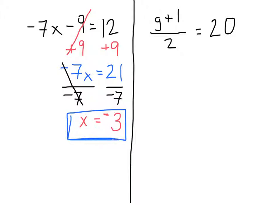This is our answer. If you want, you can plug it back in to double check. Wherever you see x in the equation, plug in negative 3. So we have negative 7 times negative 3 minus 9 equals 12. A negative times a negative is always a positive, so we have 21 minus 9 equals 12. Yes, it is — so x equals negative 3 is the answer for the first one.